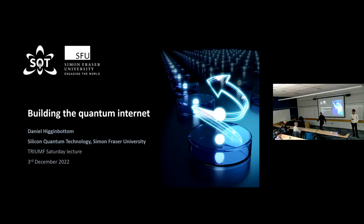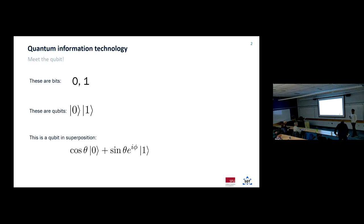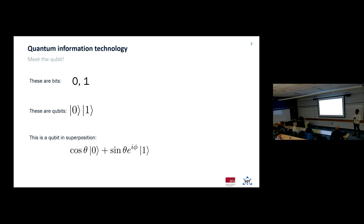Before I dive into what we're doing specifically, let's first establish what a quantum computer is and why we want to build one. You might be familiar with the fundamental units of information which underpin all classical information technologies — those are bits, discrete units of information. They can be on or off, one or zero, and pretty much every computation you do today just involves the manipulation of those bits.